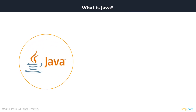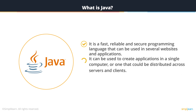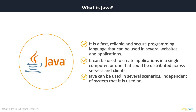So what is Java? It is a fast, reliable, and secure programming language that can be used in several websites and applications. It can be used to create applications in a single computer or one that could be distributed across several servers and clients. Java can be used in several scenarios independent of the system that it is used on.